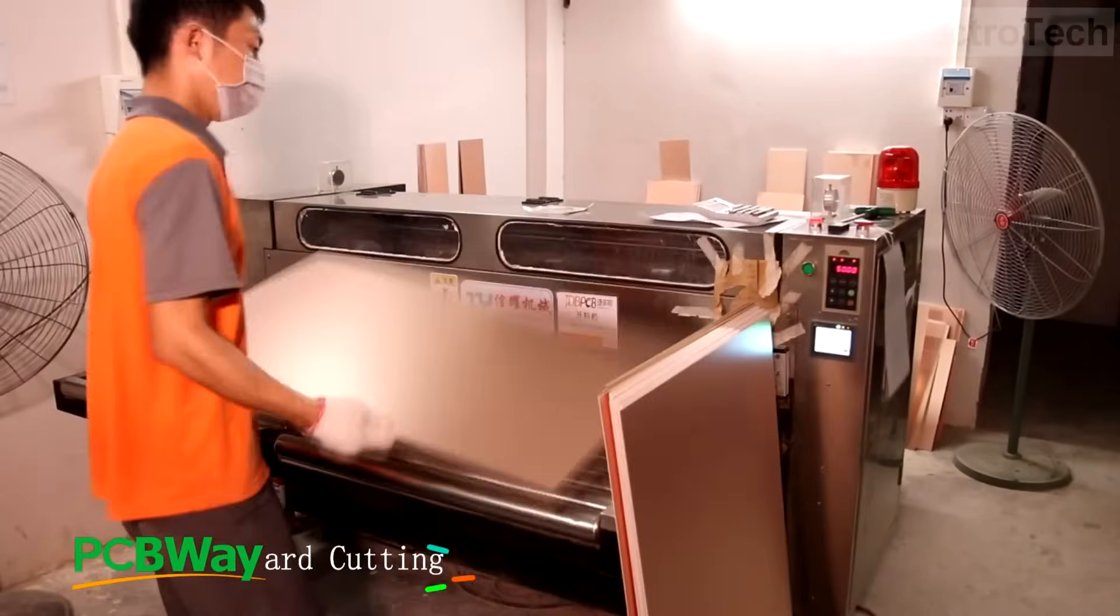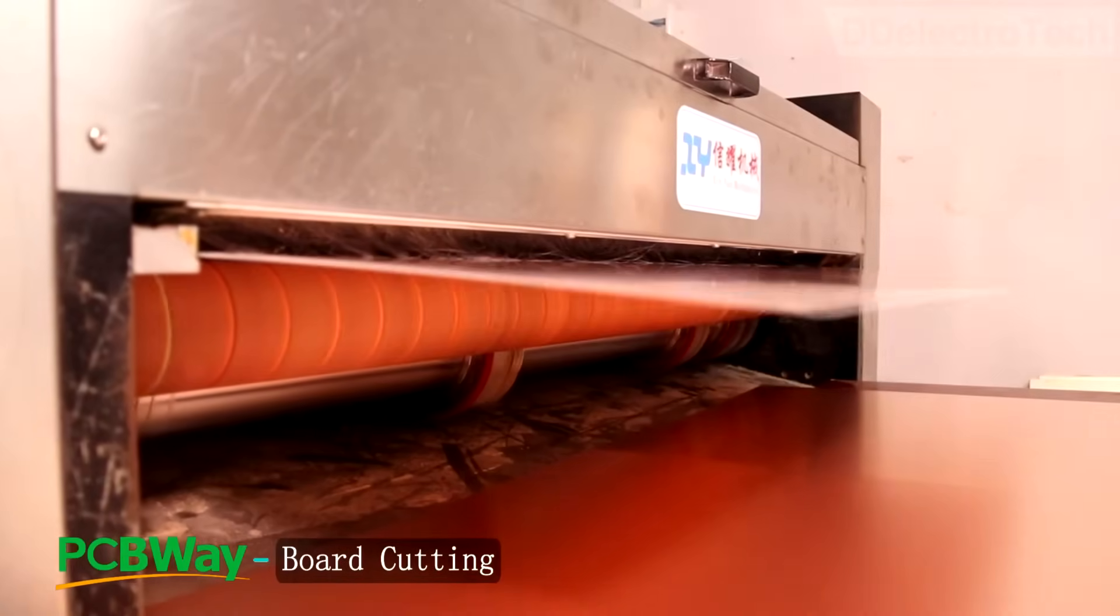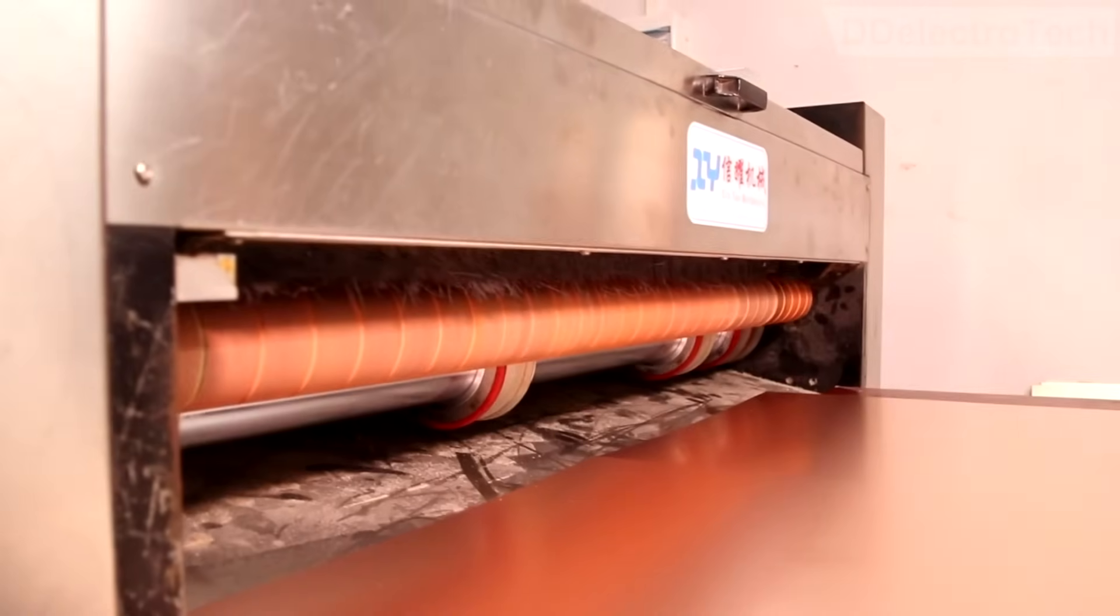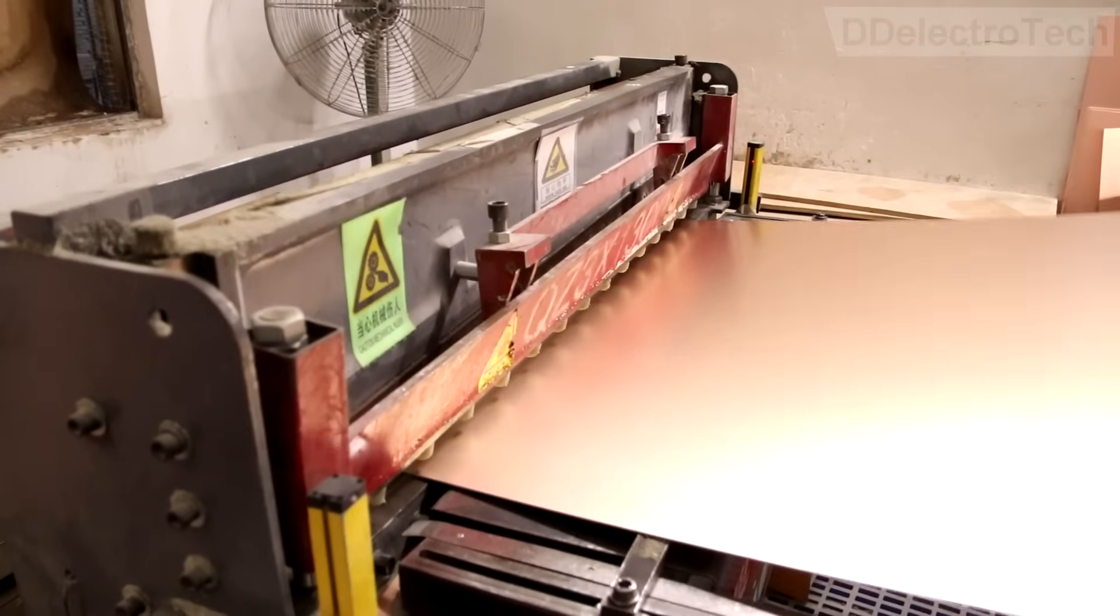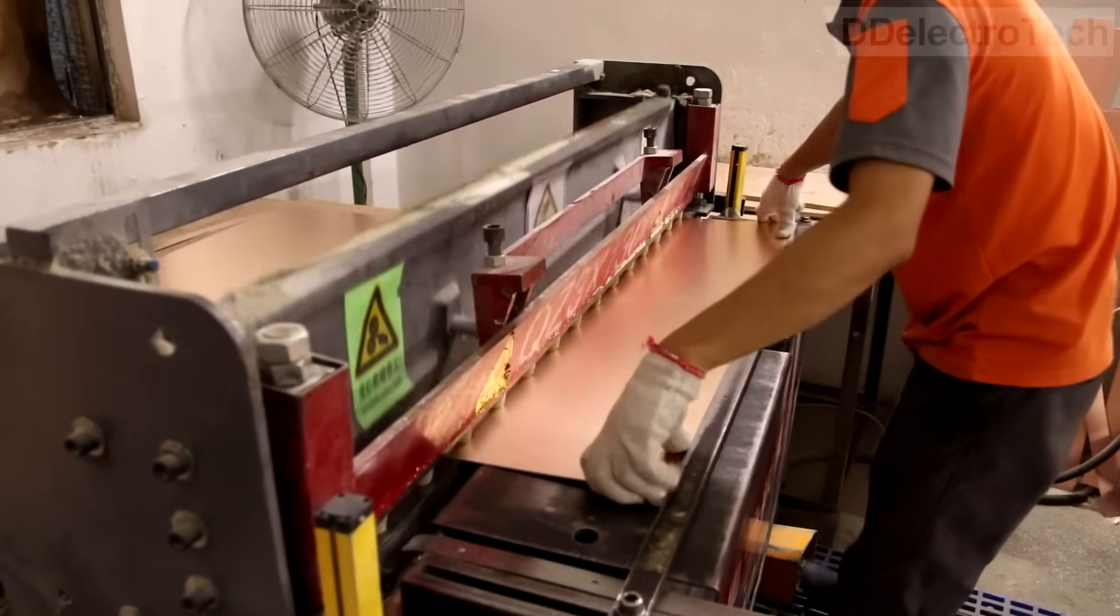First, the board is dry cleaned in a machine and then cut into small pieces which are suitable for manufacturing.